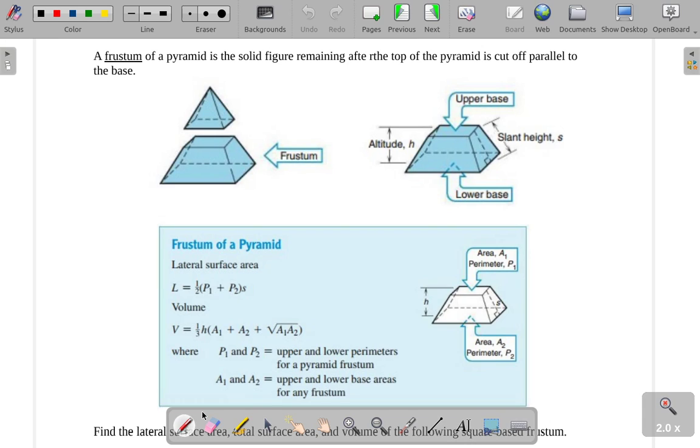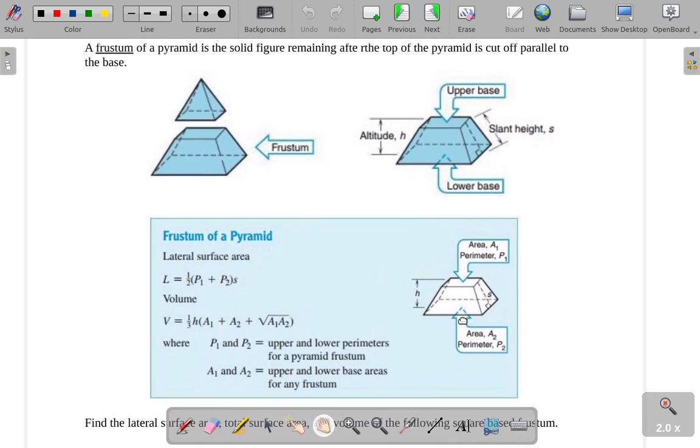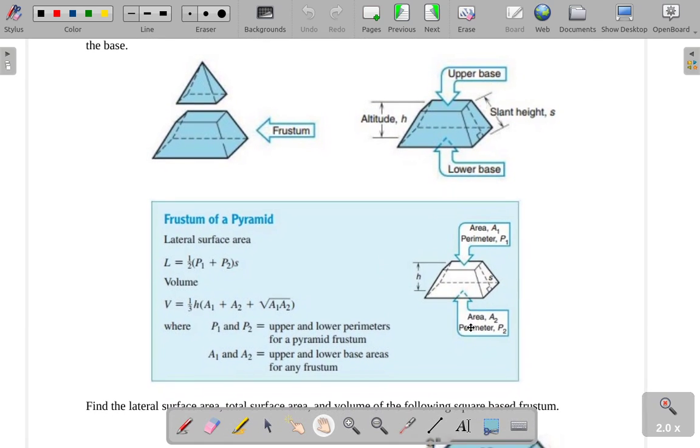A frustum of a pyramid is what we get when we take a pyramid and we cut off the top parallel to the base. Another way of looking at this is saying that it's kind of like a prism except one of the bases is scaled down from the other one. But the formulas are more closely related to pyramids, so in any case we call this a frustum of a pyramid. It's kind of a weird name, frustum, but that's what it's called.